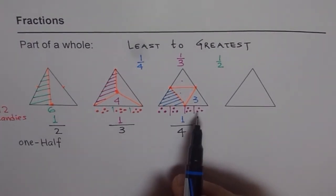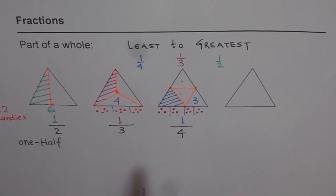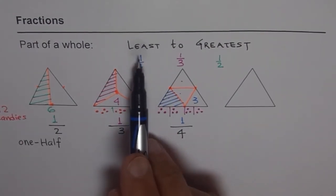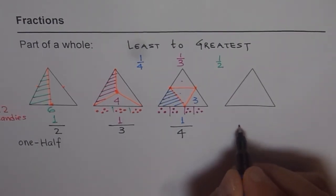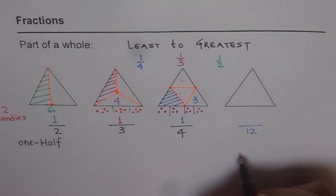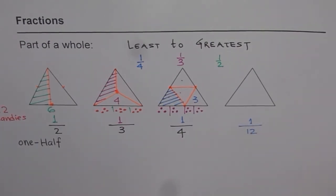So when do you get the least number of candies? When you are sharing with four people, of course. That is what fractions are all about. If you think like that, we can arrange from least to greatest. More friends means less you get. If there are 12 friends, you get just one. So that is how we can share candies with our friends, knowing about fractions.